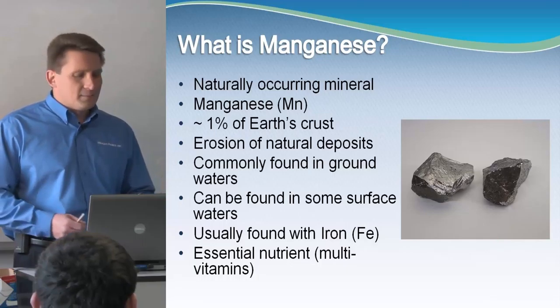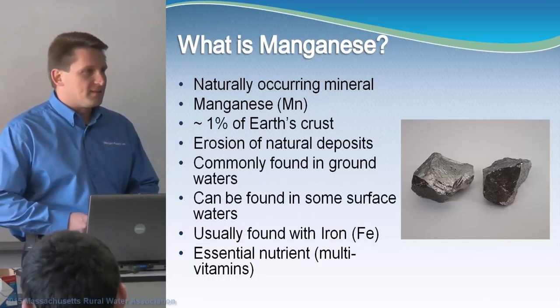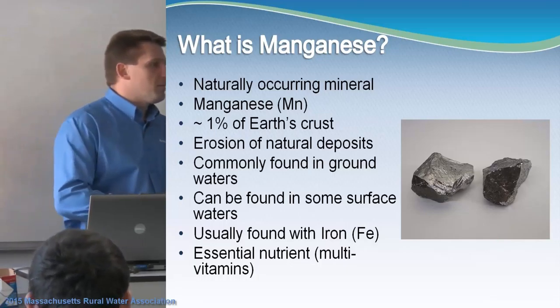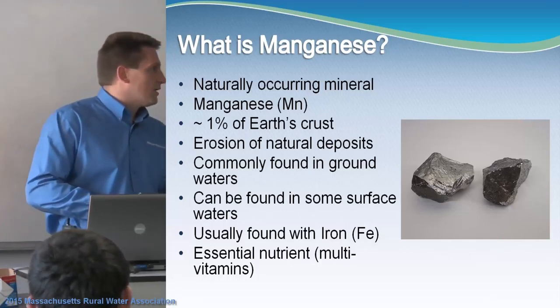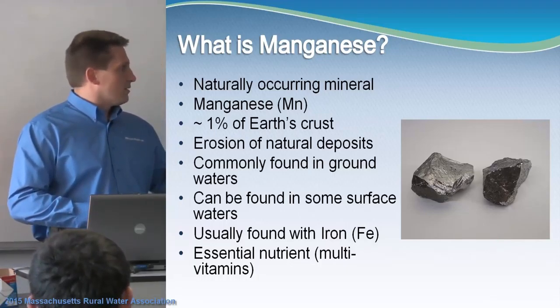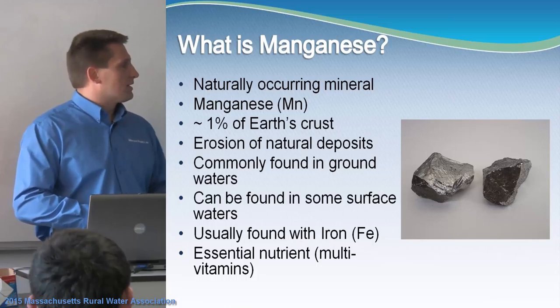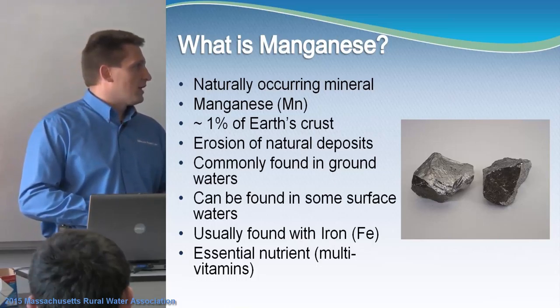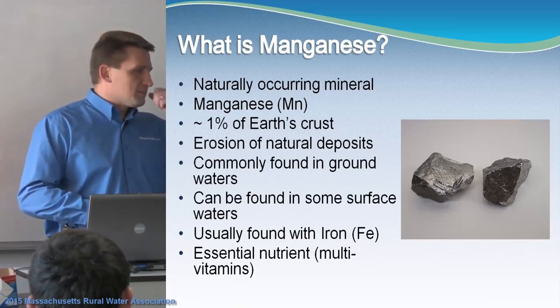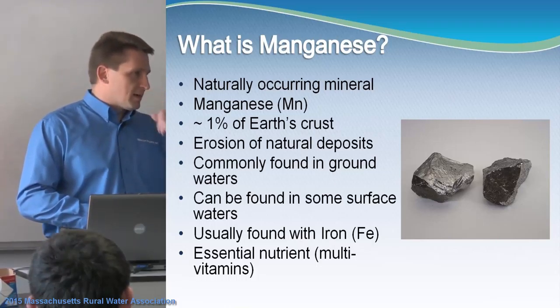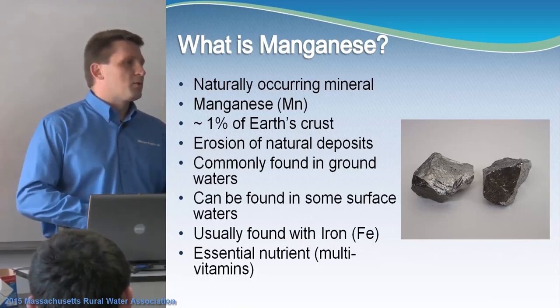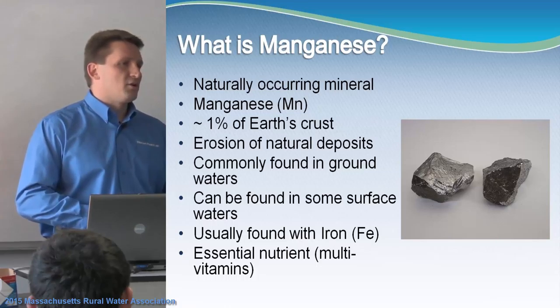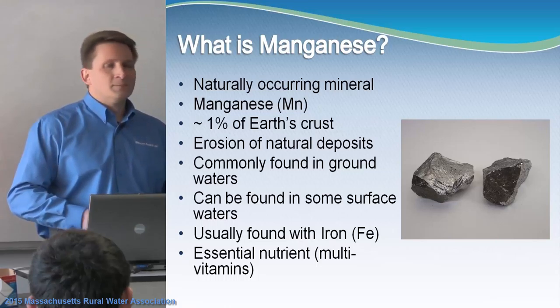What is manganese? Manganese is a naturally occurring mineral. Its chemical symbol is Mn, and it comprises about 1% of the earth's crust.